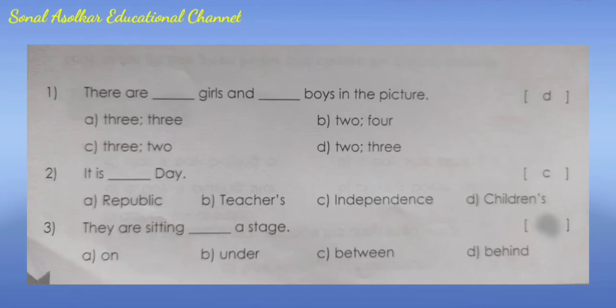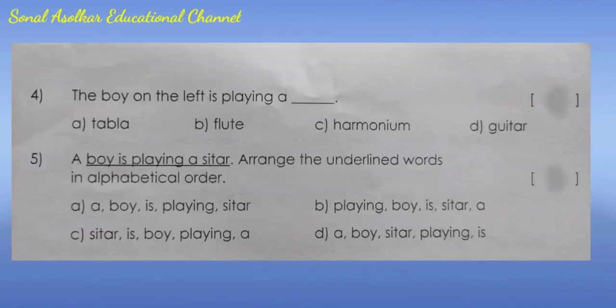Question 3: They are sitting blank a stage. Options: A) on  B) under  C) between  D) behind. The correct answer is option A - on. Question 4: The boy on the left is playing a blank. Options: A) tabla  B) flute  C) harmonium  D) guitar. The correct answer is option B - flute.